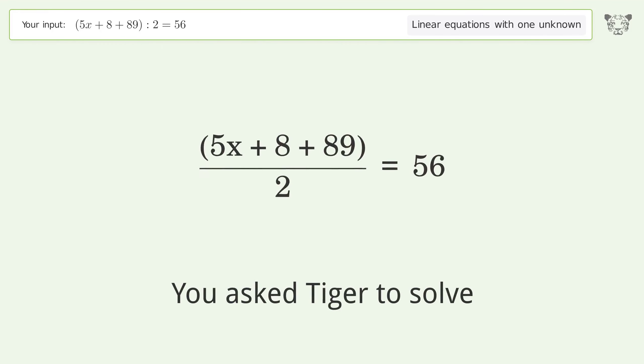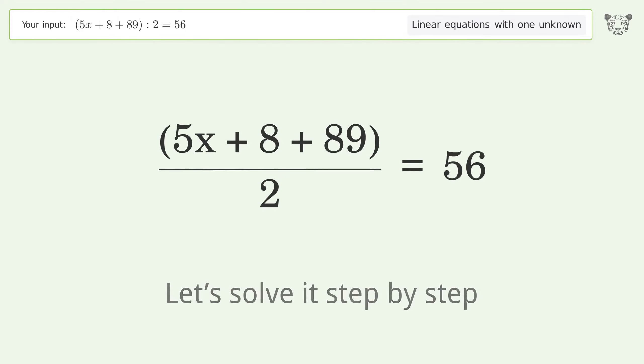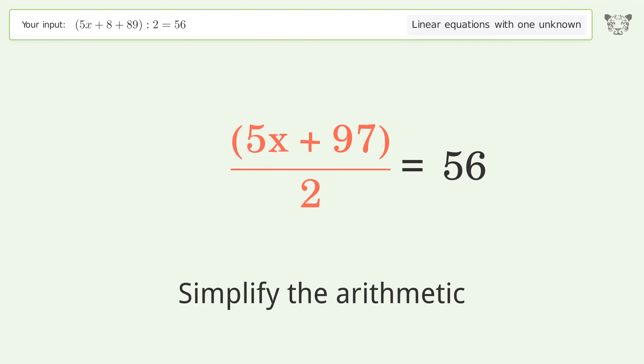You ask Tiger to solve this, which deals with linear equations with one unknown. The final result is x equals 3. Let's solve it step by step. Simplify the expression, simplify the arithmetic, break up the fraction.